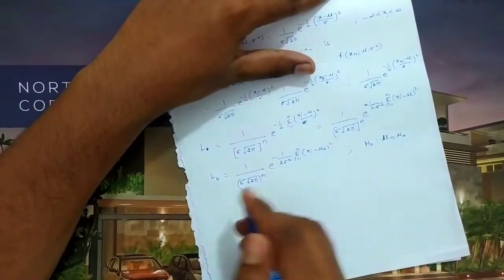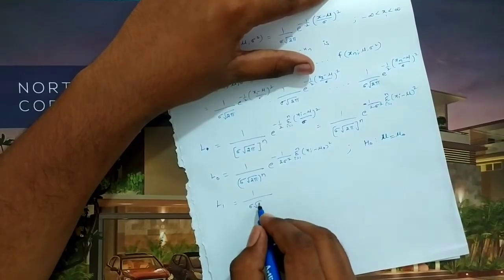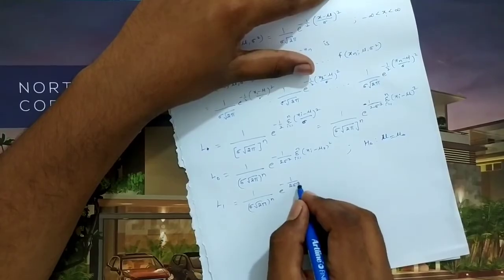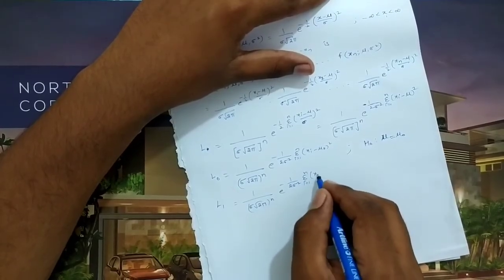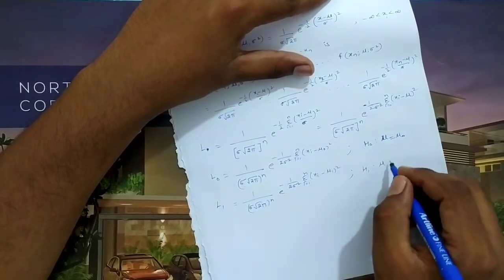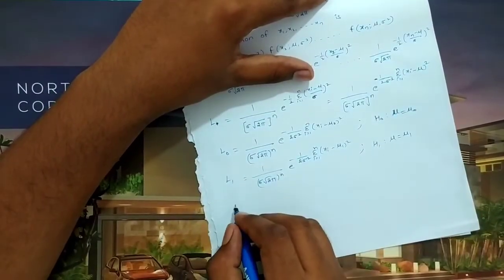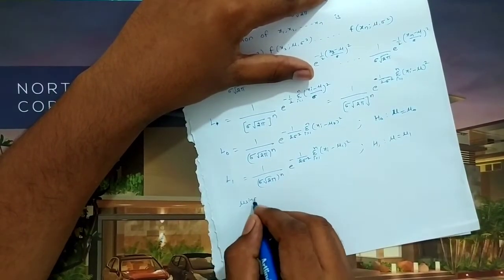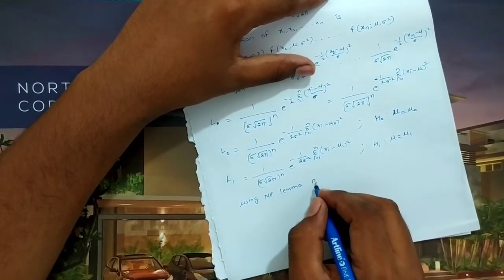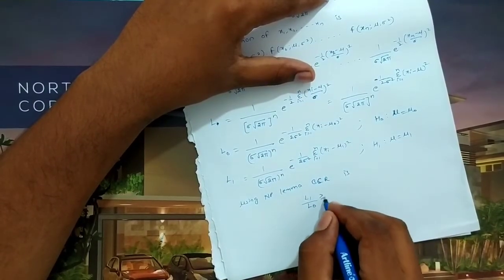The likelihood function under the alternative hypothesis H1 (μ = μ1) is: L1 = (1/σ√(2π))^n × e^(−(1/2σ²) × Σi=1 to n (xi − μ1)²). Now, using the Neyman-Pearson lemma, the best critical region is defined by L1/L0 ≥ k.